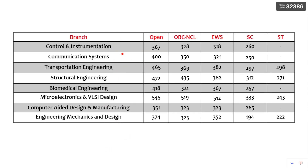Other branches also listed include Control and Instrumentation, Communication Systems, Transportation Engineering, Structural Engineering, Biomedical Engineering, Micro Electronics and VLSI Design, Computer Aided Design, and Manufacturing Engineering, Mechanics and Design. You can go through these cutoffs as well.